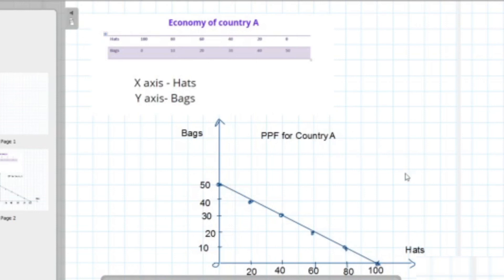So constructing a PPF is pretty easy. The difference between a straight line or linear PPF and a concave PPF is not much different. So this is the concave shape PPF, and this is the linear PPF or straight line PPF.